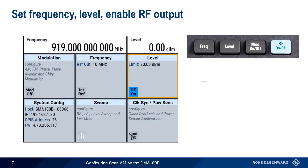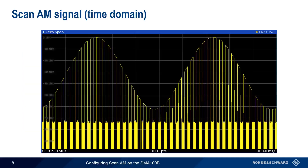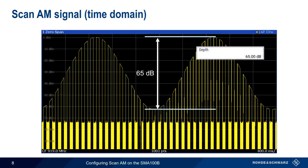The only thing left to do now is to set the frequency and level, and then enable RF output. Looking at the generated signal using a spectrum analyzer in zero-span mode, we can easily see our configured modulation depth of 65 dB, as well as the characteristic shape of a Scan-AM modulated signal.